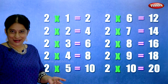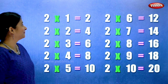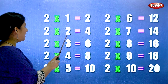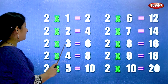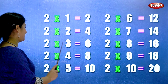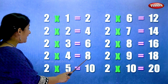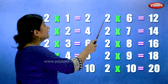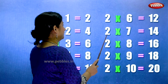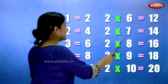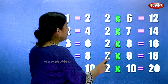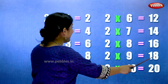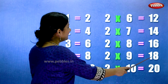Let's learn the table of 2 one more time. 2 ones are 2. 2 twos are 4. 2 threes are 6. 2 fours are 8. 2 fives are 10. 2 sixes are 12. 2 sevens are 14. 2 eights are 16. 2 nines are 18. 2 tens are 20.